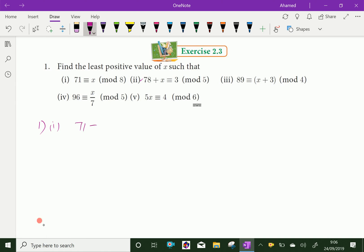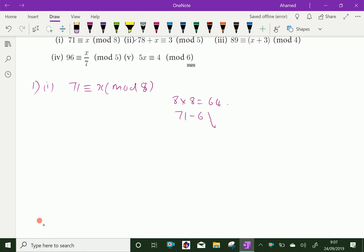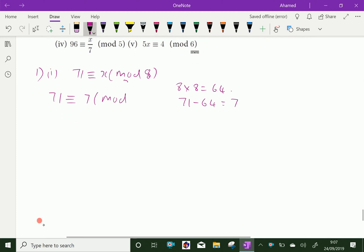71 is equivalent to x mod 8. Here, you have to find the first multiple of 8 under 71. 8 times 8 is 64, and you have to subtract that 64 from 71. It gives the remainder 7. Therefore, we can say 71 is equivalent to 7 mod 8, which means we get x as 7.